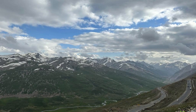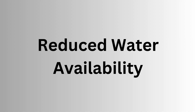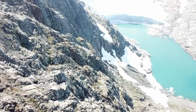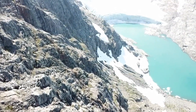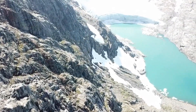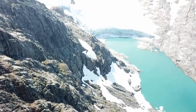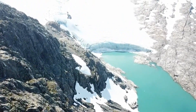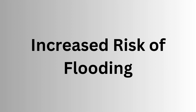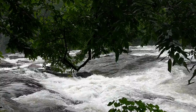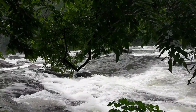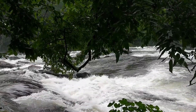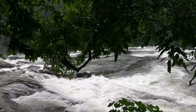The retreat of Racoat Glacier is having a number of negative impacts, including reduced water availability. Glaciers are a major source of water for irrigation and drinking in many parts of the world, and the retreat of Racoat Glacier is reducing the amount of water available for these purposes. Additionally, when glaciers retreat they leave behind a large amount of debris, which can dam rivers and lead to flooding.